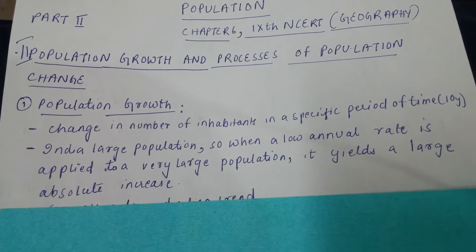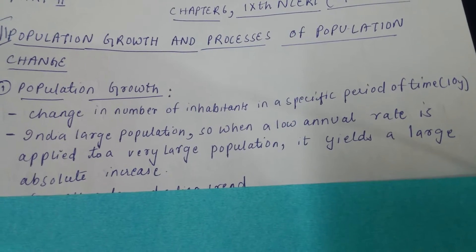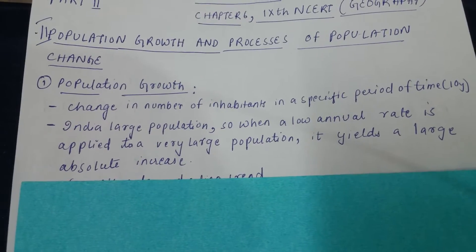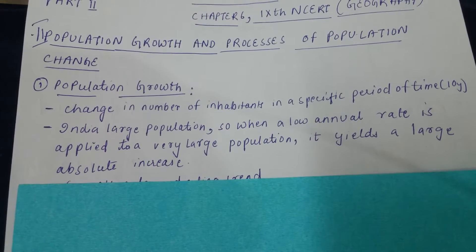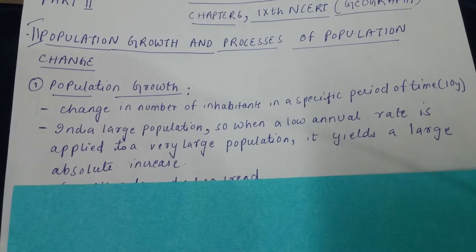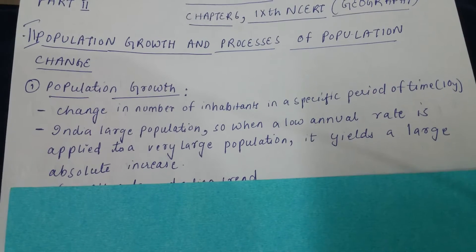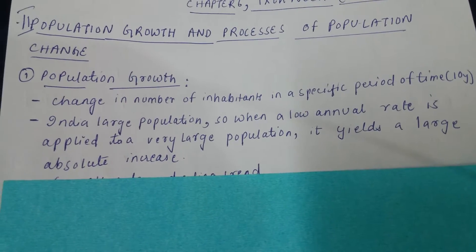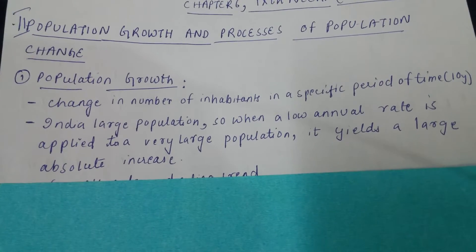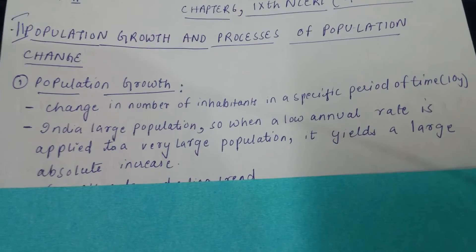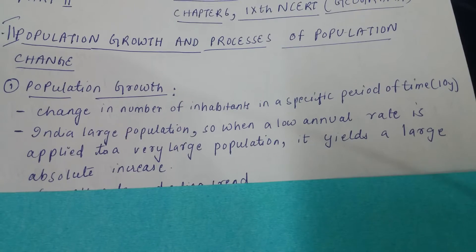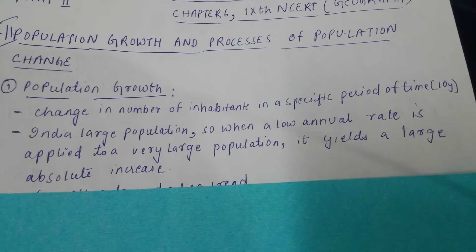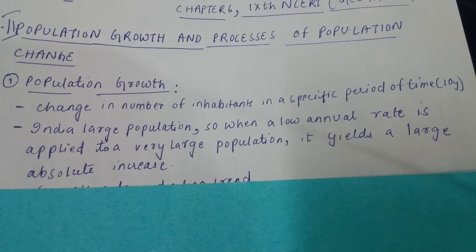Here is a very important point: India has a large population, so when a low annual rate is applied to a very large population, it yields a large absolute increase. The population is growing, but not in the way it was in the 1960s or 1970s. However, even a small increase will reflect in an absolute increase because India is such a large country — if only one child is born in 20 families every day, it will still lead to huge growth in the long run.